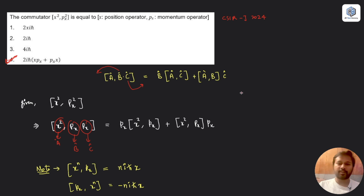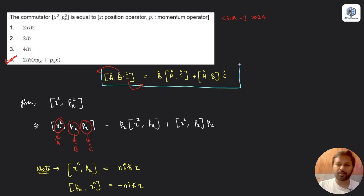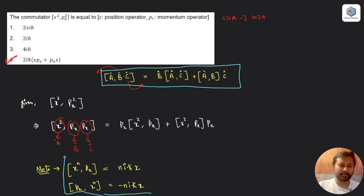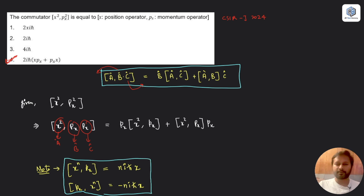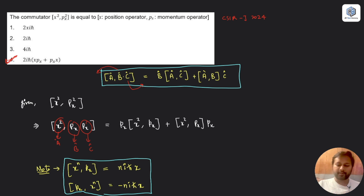So the two most important things for this question were: the product commutator identity [A, BC] = B[A,C] + [A,B]C, and the general formula [x^n, px] = n·iħ·x^(n-1). Knowing these identities is very important if you are preparing for CSIR NET or GATE exams.